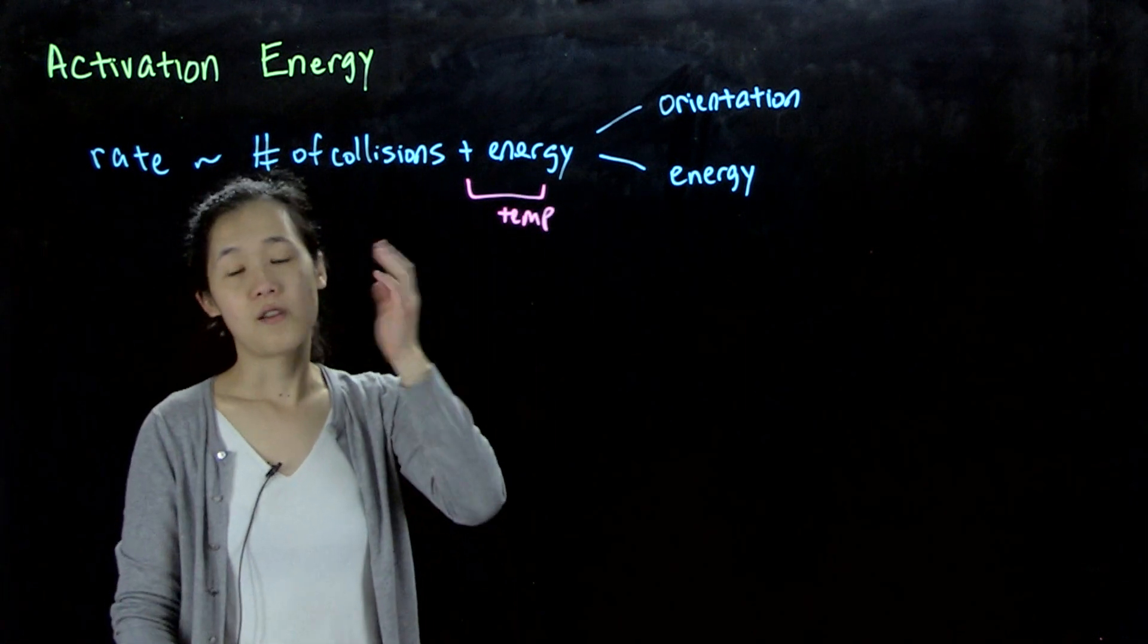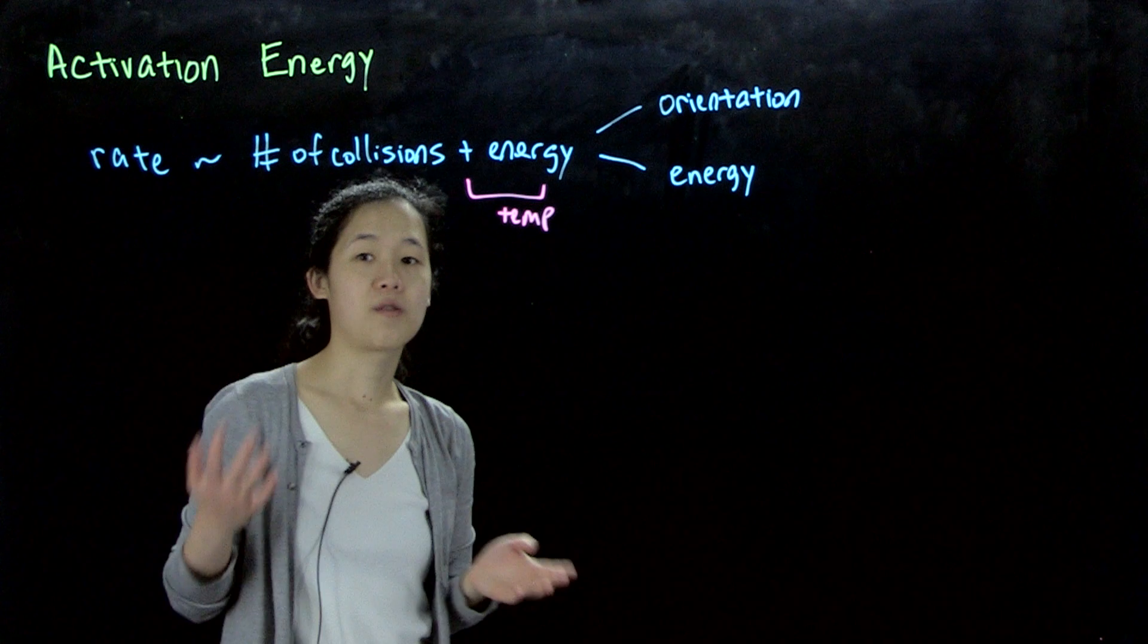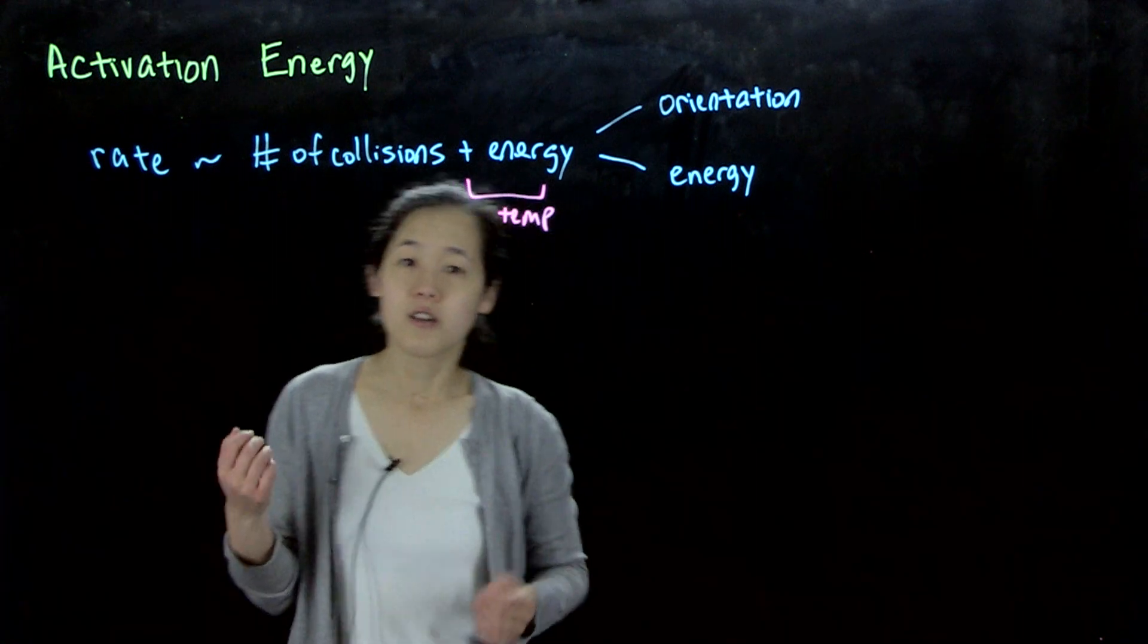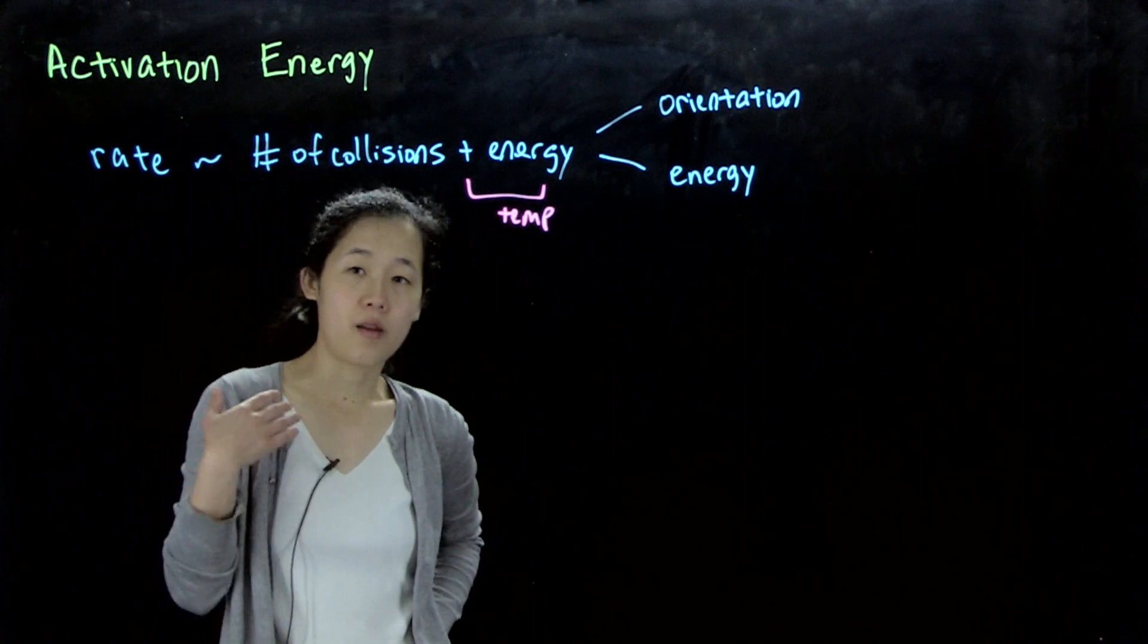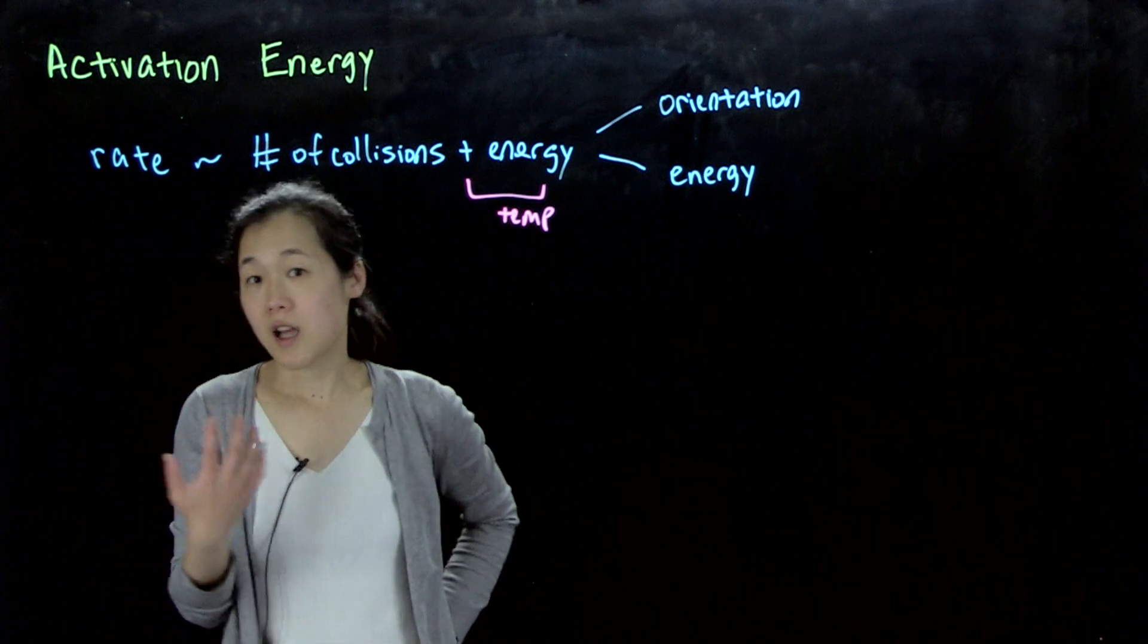And then so the frequency is also related, the number of collisions is also related to temperature, like how fast they're moving. So basically the rate tells us the probability at which the reaction can occur.